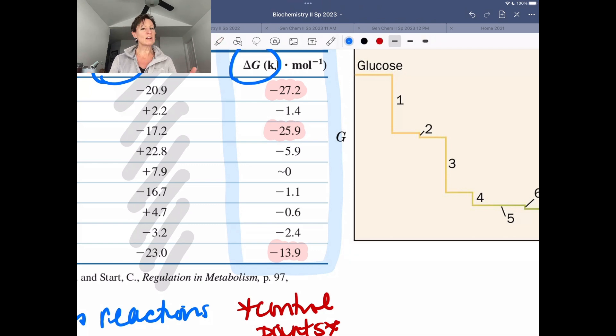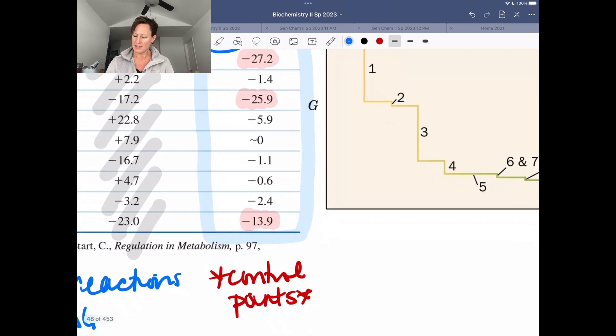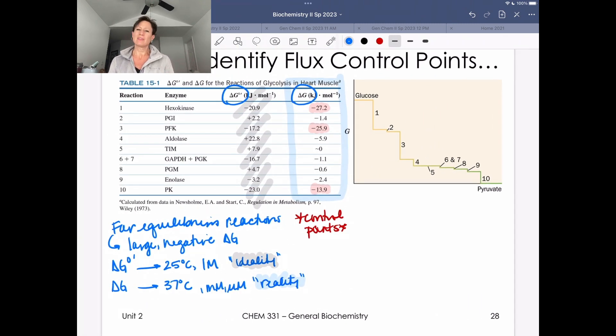Well, one of these we can kind of rule out right away. So if we think about reaction 10, that's not going to be a good control point because it's at the end. Remember, when we talk about metabolic pathways, I want you to be thinking about them like they're an assembly line. And a control point really represents your quality control or checkpoint manager.